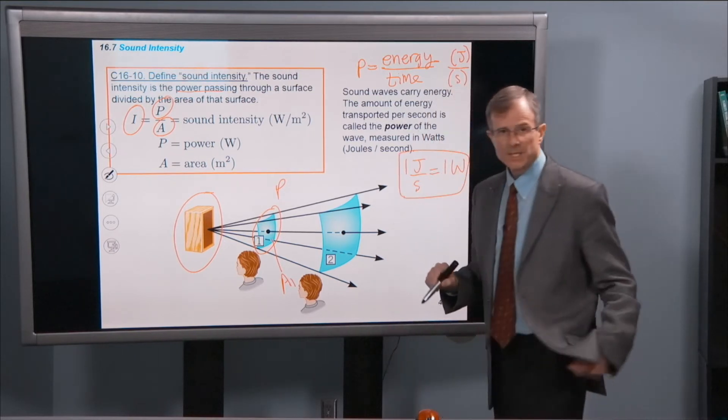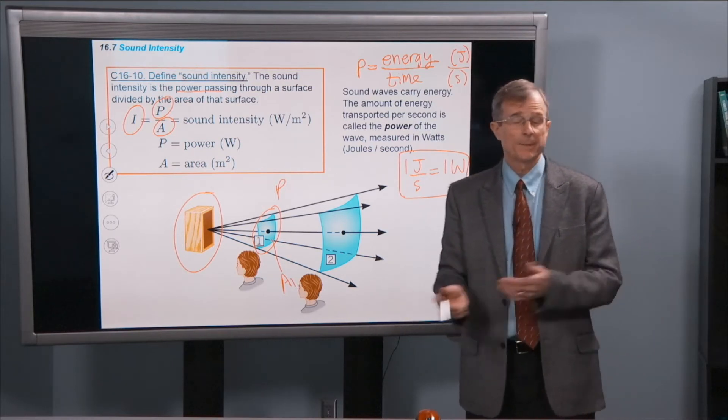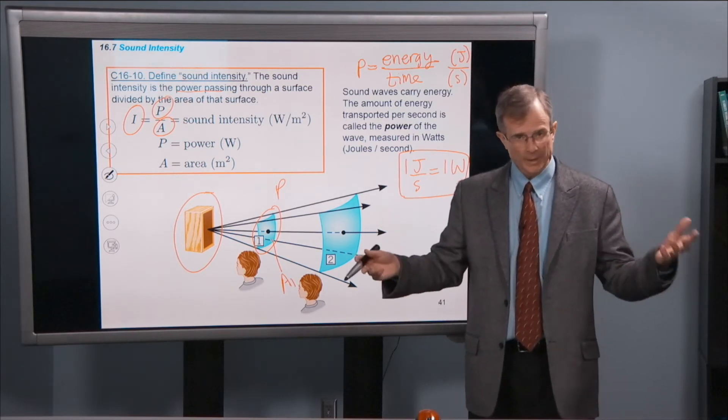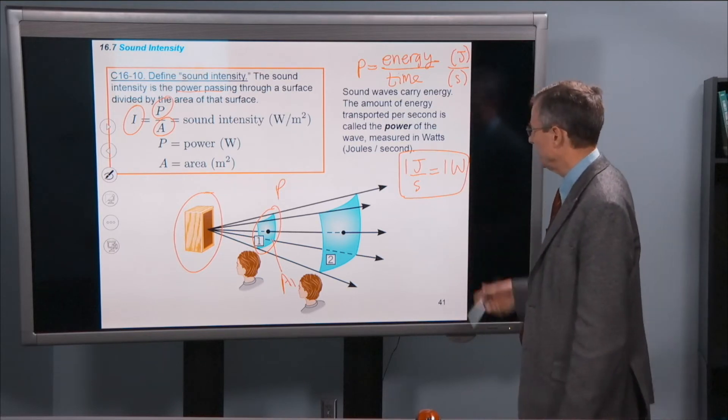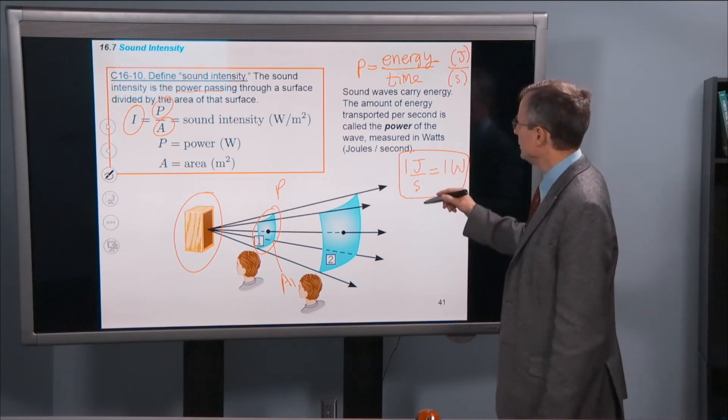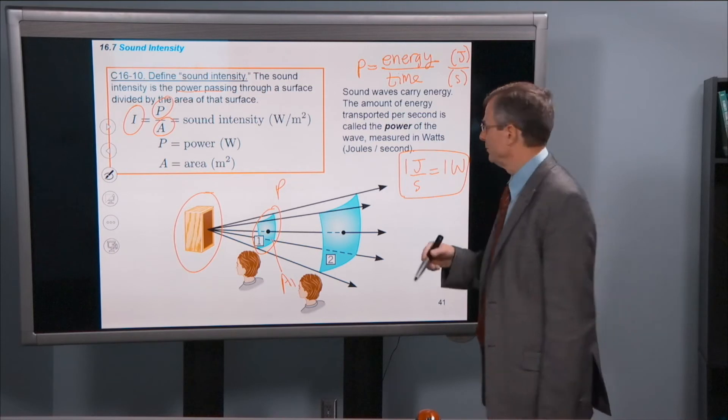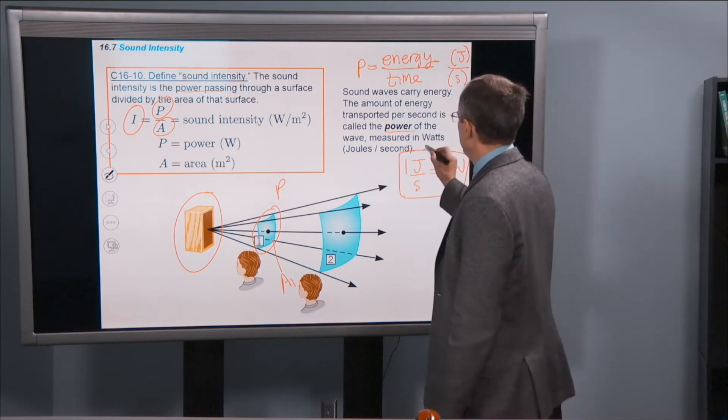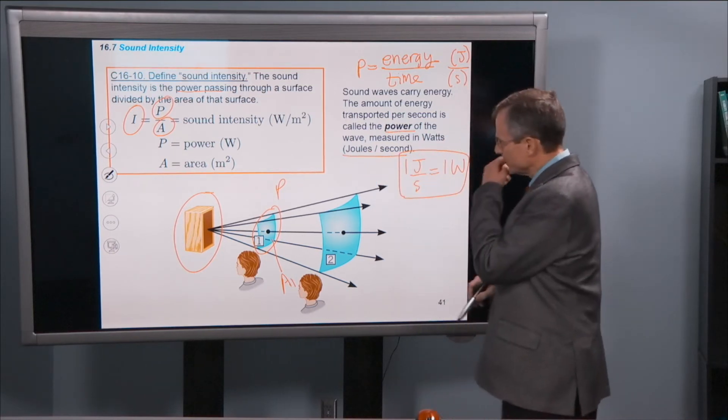And that's the very same watt that you measure the strength of light bulbs, 100 watt light bulb, 50 watt light bulb. That's what that means. So power is an energy per unit time, that's just a review from last semester. And it's measured in watts, joules per second.